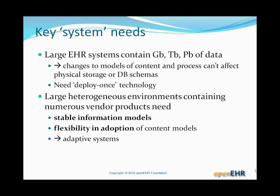In heterogeneous environments there will be numerous vendor products. We need stability in the information models — so all those products can aim for something that is the same across all products and enables them to share data at a basic level. We need flexibility in adoption of content models, so we can bring new models of content in at whatever rate and according to whatever plan makes sense. Ultimately, what we are talking about is adaptive systems.